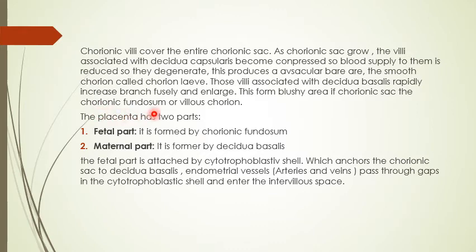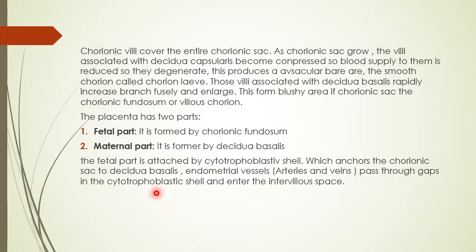Villi grow toward the decidua basalis and the name given is chorionic frondosum — meaning bush-like. The opposite side is named chorion laeve. Villi associated with the decidua basalis rapidly increase, branch profusely, and enlarge, forming a bushy area of the chorionic sac. The placenta has two parts: the fetal part formed by chorionic frondosum, and the maternal part formed by decidua basalis. The fetal part is attached by the cytotrophoblastic shell which anchors the chorionic sac to the decidua basalis.